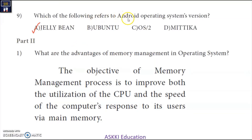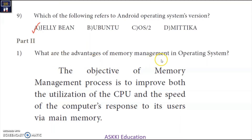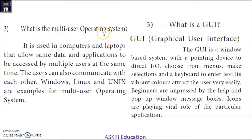Ninth question: Which of the following refers to an Android operating system version? The options contain the correct Android versions. Moving to Part 2, the first question: What are the advantages of memory management in an operating system? The advantage is to improve the utilization of the CPU and the speed of the computer's response to its users via main memory.